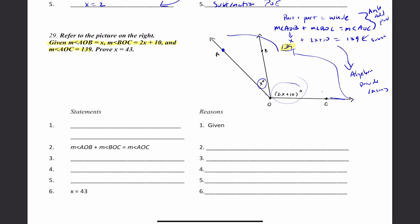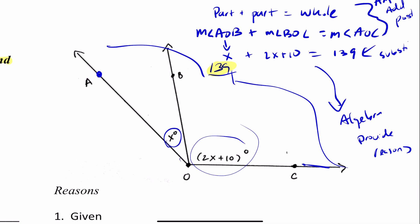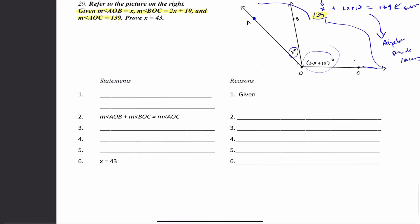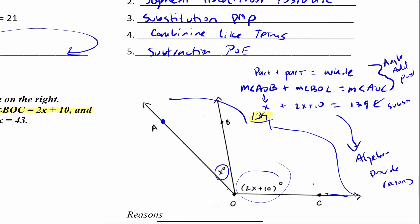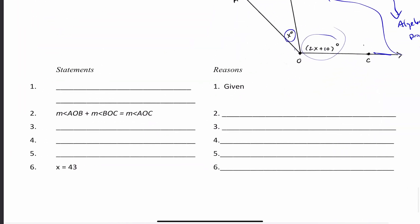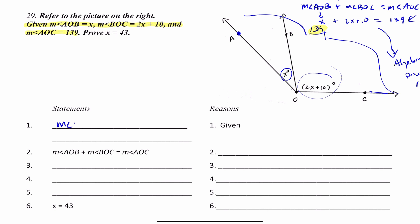Given: measure angle AOB is X, measure angle BOC is 2X plus 10, and measure angle AOC is 139. Prove X equals 43. This picture was very helpful — it gave me an idea because I can see I'm really dealing with part plus part equals whole. That's the angle addition postulate. I do not write the proof statement in the givens, because that is what you're trying to show — it should be at the end.